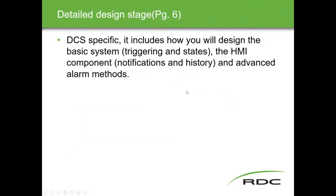The detailed design stage is DCS-specific and includes triggering and state — what items will cause alarms — as well as the HMI component: how to notify operators, how to record history, and how to manage all alarm data being brought in. This involves moving information from the process area into the alarm and data historian areas. Alarm data and historical data are typically on separate servers in a DCS system.